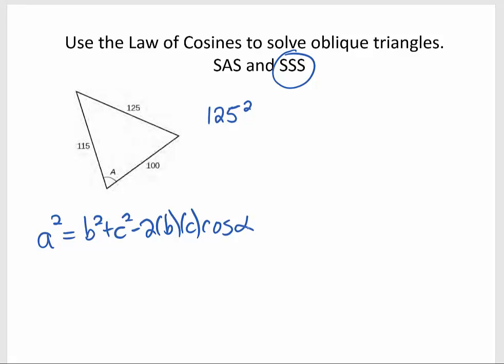And so that's what I'm applying here. One of the sides, 125 squared, equals the sum of the squares of the other two sides. So that's 115 squared plus 100 squared